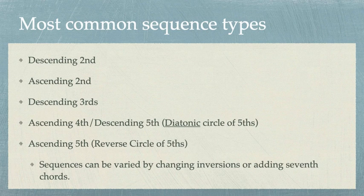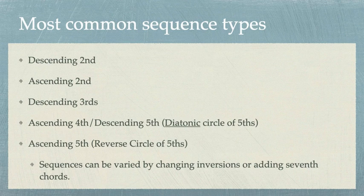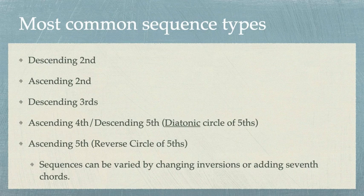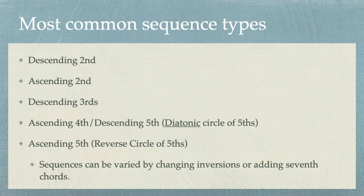Now may be a good time to discuss which are the most common sequence types. It's easier to remember when you put them in order so you can know which are descending and which are ascending. Just like melodic sequences, harmonic sequences of descending and ascending seconds root motion are also common. Descending thirds, ascending seconds, or descending fifths — our recent circle of fifths example — are also common. The ascending fifth sequence goes against tonal motion by going around the circle of fifths clockwise, so you generally won't get a full progression, but ascending fifths are also a common sequence. Note that sequences can be varied by changing inversions or adding sevenths to the chords — those small variations don't change the fact that a sequence is happening, because we're always measuring root-to-root motion.